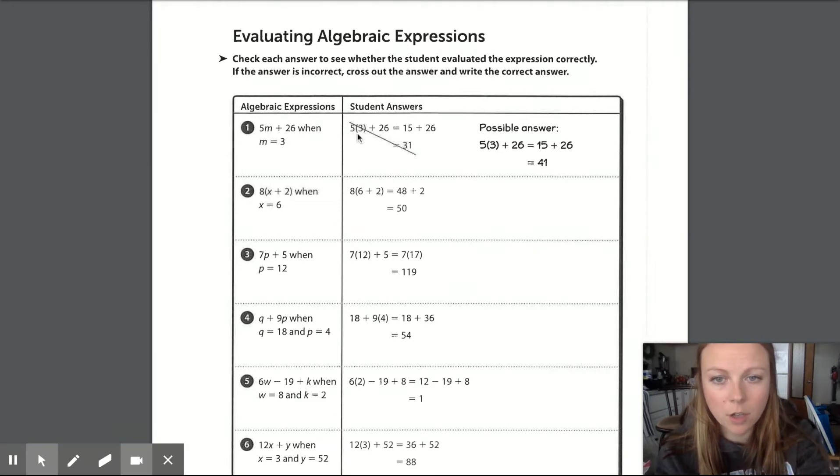We're checking this person's work. So 5 times 3 is 15, plus 26 is not 31. So their computation in that last step was incorrect. So what they want you to do, if it's correct, you're going to leave it. But if it's incorrect, you are going to cross out and then add your own work to the side and correct their work.